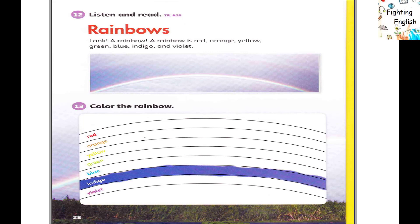Activity 12: Listen and read — Rainbows. Look, a rainbow! A rainbow is red, orange, yellow, green, blue, indigo, and violet.